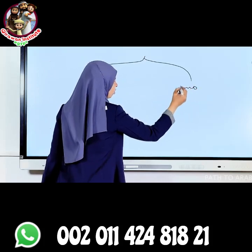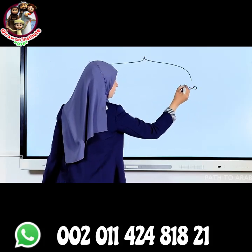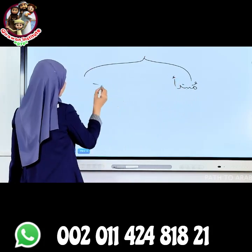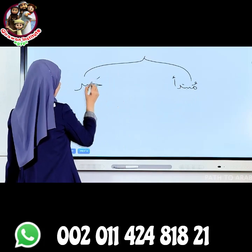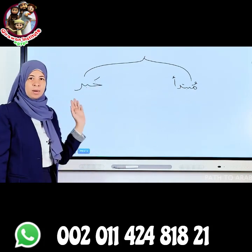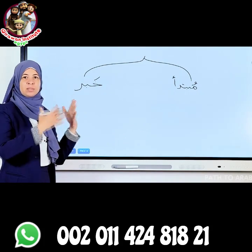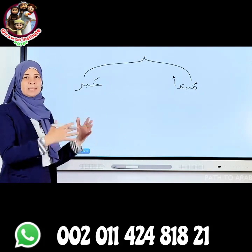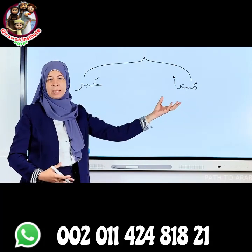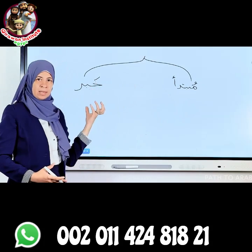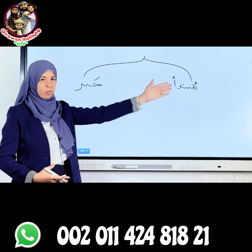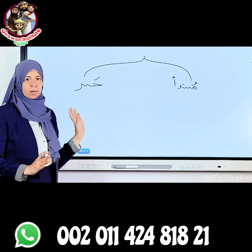المبتدأ is the subject of a nominal sentence. المبتدأ is subject and خبر is predicate. Predicate means to complete the meaning of a sentence. So you have a noun or a name — it can be a pronoun — and the خبر completes the meaning of the sentence. هذا مبتدأ وهذا خبر.